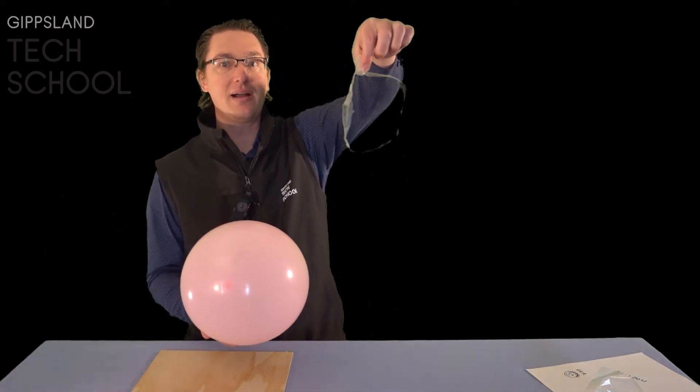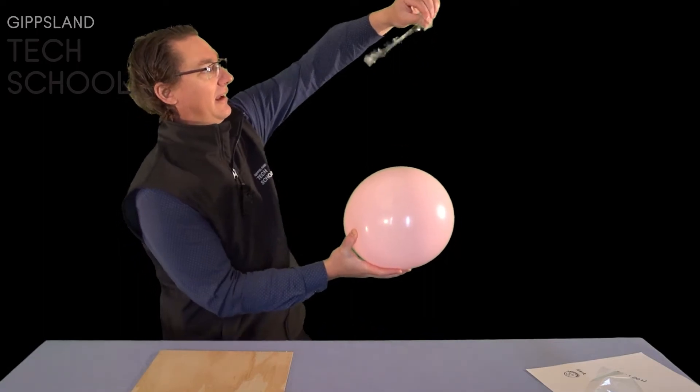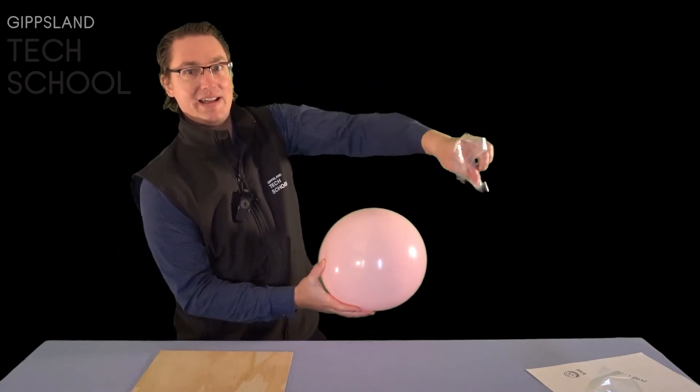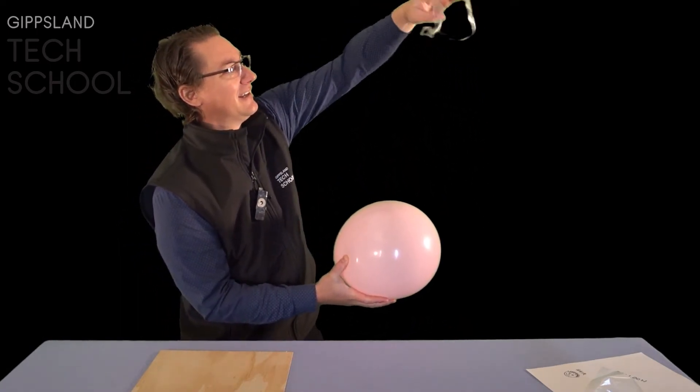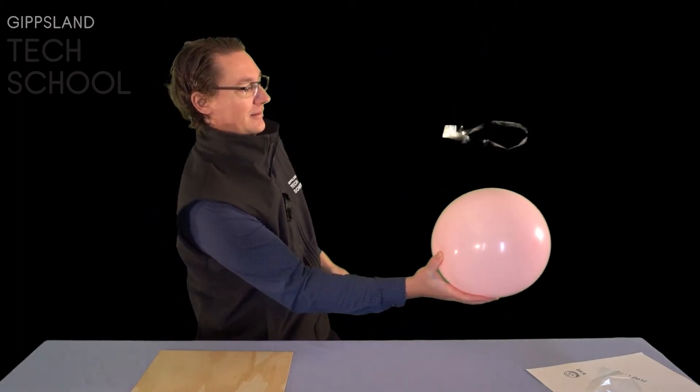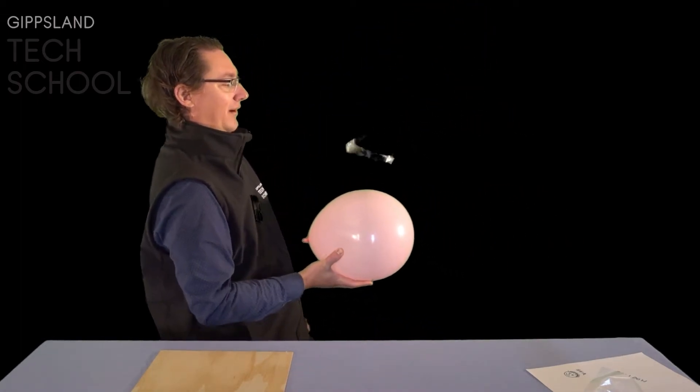We now have everything we need to get our UFO flying. So we're going to pick your UFO up, drop it in the air and hover it over the balloon. Now it may stick to your hand like mine does. Once you get it off, now we have a hovering UFO.